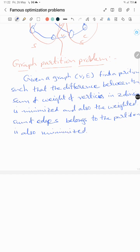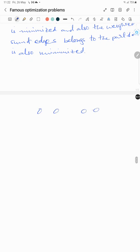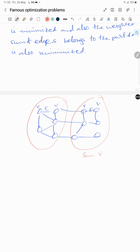That means suppose a big graph with a number of vertices are there and connected with edges. If you partition this graph into two, sum of V's here is approximately equal to sum of V's here. And not only that, the sum of edges in each partition also should be minimized.